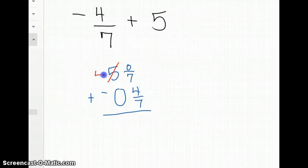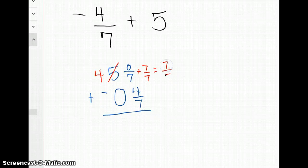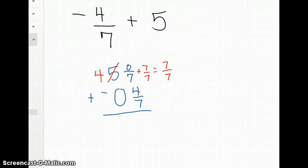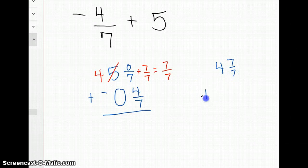So I'm going to take 1 away from 5, which gives me 4, and I'm going to add it as 7 sevenths to my fraction, which just gives me 7 sevenths because 0 sevenths plus 7 sevenths is 7 sevenths. So I actually have the problem 4 and 7 sevenths plus negative 4 sevenths. And we're subtracting since they're different signs.